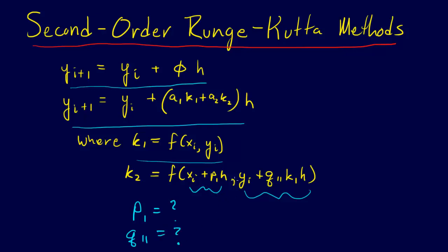But even if we know k1, and even if we know what k1 and k2 is, we also don't know what our a1 is equal to and what our a2 is equal to. So we have these four unknowns, and we could just make up numbers and put them in here, and it would be a second-order Runge-Kutta method.